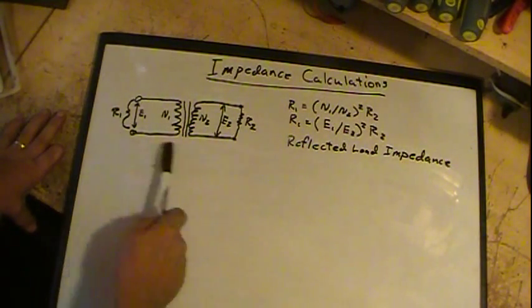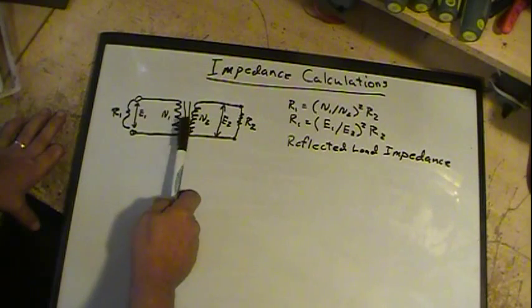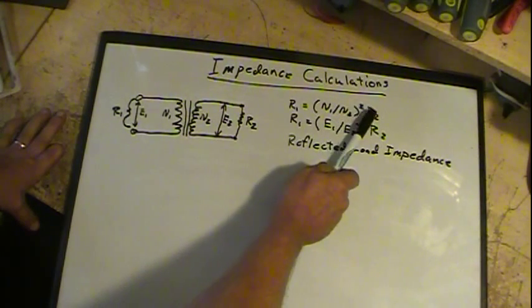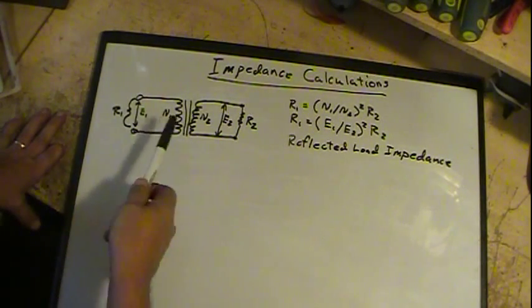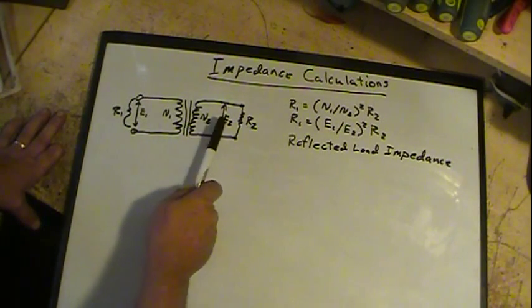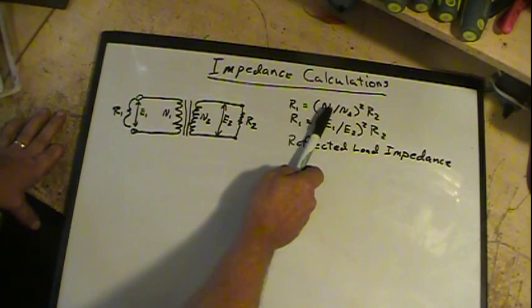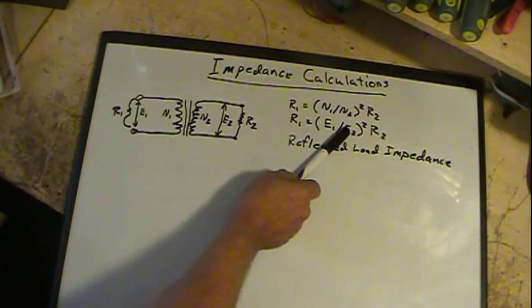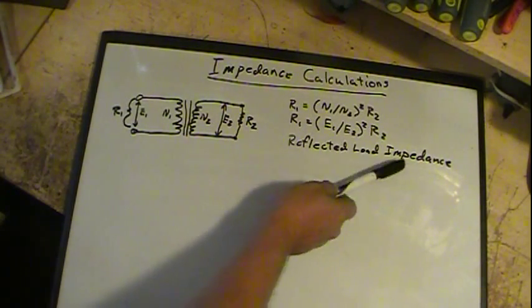So to figure this up, R1 equals the quantity, the ratio, turns ratio N1 to N2, N1 divided by N2, we take that squared times R2. If you want to figure it from the voltages, you can, since the ratio of E1 to E2 is the same as the ratio of N1 to N2, as you remember from the last video. So we take that ratio and square it times R2 and that gives us R1. This is called the reflected load impedance.